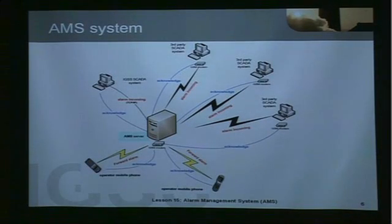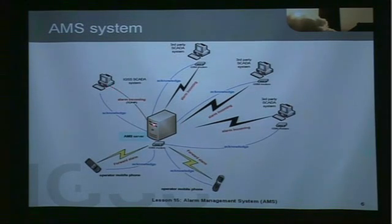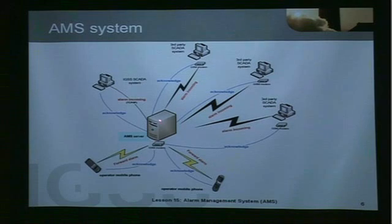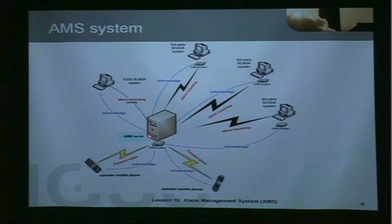Here we have an overview of an AMS system which we could configure with various SCADA systems. In the center here we have the AMS server — the collection point for alarms from all of these various systems. Here we see an IGSS system communicating with the alarm server via a TCP/IP connection. Here we have a couple of other third-party SCADA systems; they communicate with the AMS server via a GSM modem, sending their alarms to the IP address at the AMS server. Alarm acknowledgement can occur out to the various SCADA processes, or alarms can be forwarded to operator personnel on their cell phones, who are then able to acknowledge the alarms back to the AMS server.